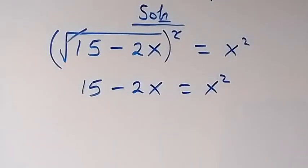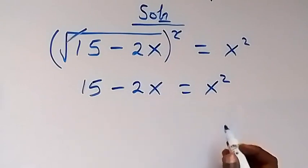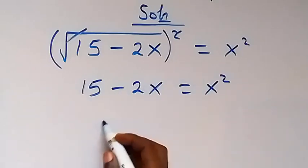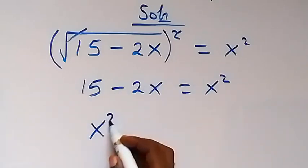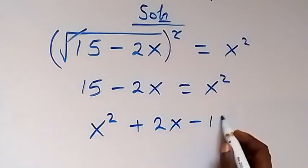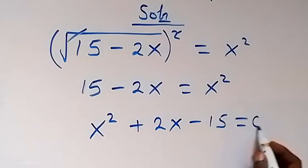We can take everything to one side and form a quadratic equation. Let's take everything on this side here. So this side we have x squared, then plus 2x, then minus 15 equals to 0.